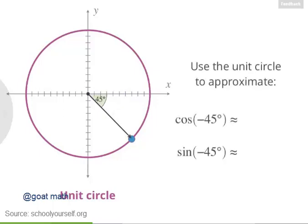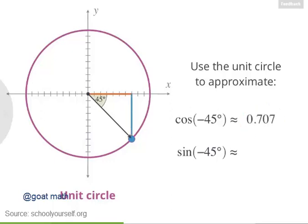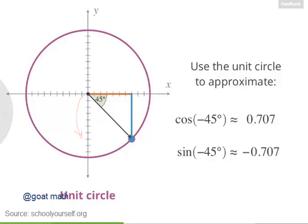Try using the x and y-coordinates of this point on the unit circle to approximate the cosine and sine of negative 45 degrees. Remember, these tick marks are each separated by a distance of 0.1. Those were some good approximations. It turns out that the cosine of negative 45 degrees is approximately 0.707, and the sine of negative 45 degrees is approximately negative 0.707, because this point is below the x-axis. Try putting these two facts together to evaluate the tangent of negative 45 degrees. If you're not sure how to do this, click up here instead.